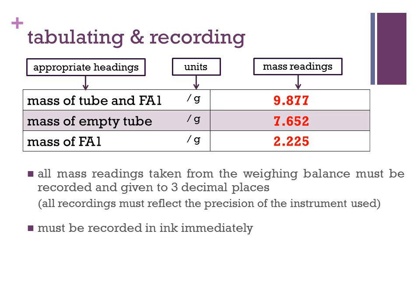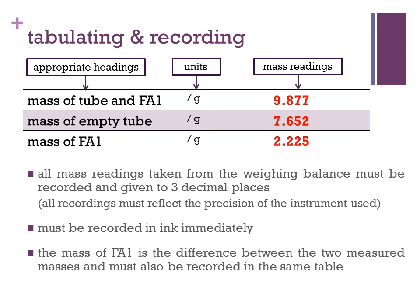Readings must be recorded in ink immediately after they are taken. The mass of FA1 is the difference between the two measured masses and must also be recorded in the same table.